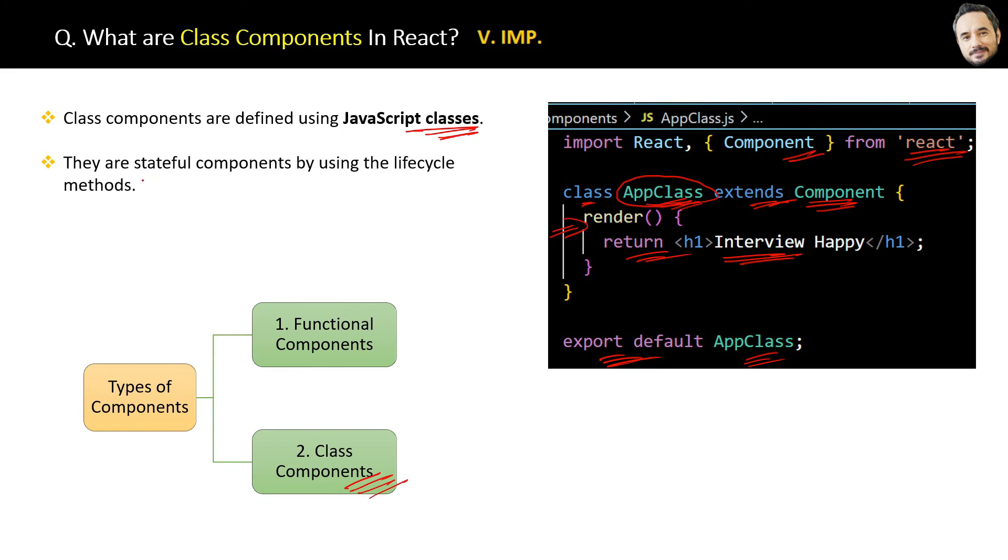Second, class components are stateful components by using the lifecycle methods. That is their advantage. Third, the render method in a class component is responsible for returning the JSX. All of which is written here for later revision from the book.